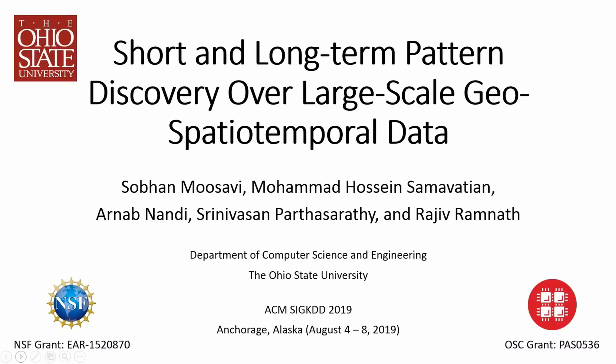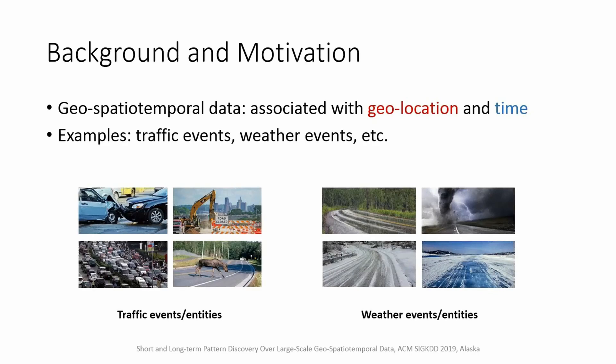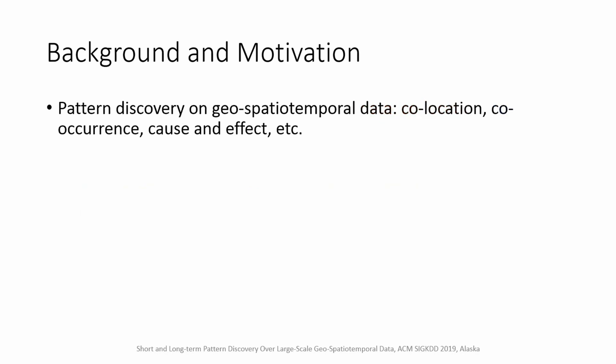This paper is about short and long-term pattern discovery over large-scale geospatiotemporal data. Geospatiotemporal refers to any data which is associated with geolocation and time information. Examples of such data are traffic and weather events or entities, such as accident, construction, animal in the road, rain, and snow. Here, pattern discovery is about exploring any co-location, co-occurrence, or cause and effect type of pattern.